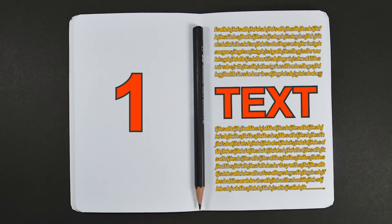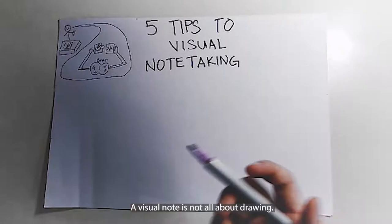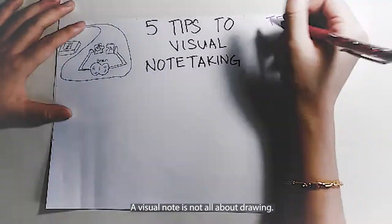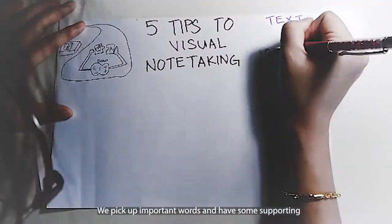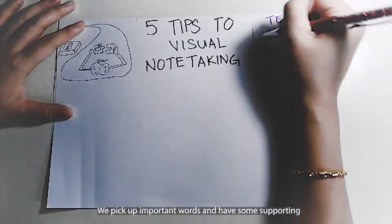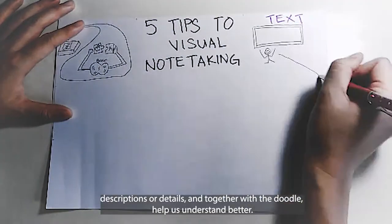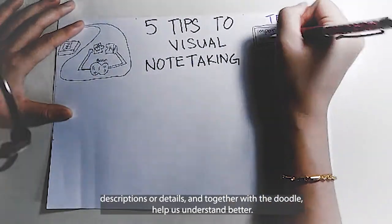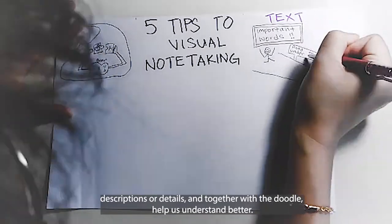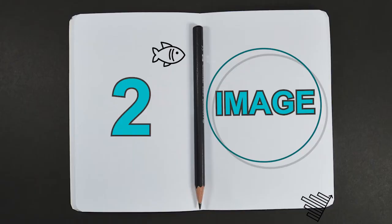The first tip is text. A visual note is not all about drawing. We pick up important words and have some supporting descriptions or details, and together with the doodle, they help us understand better.